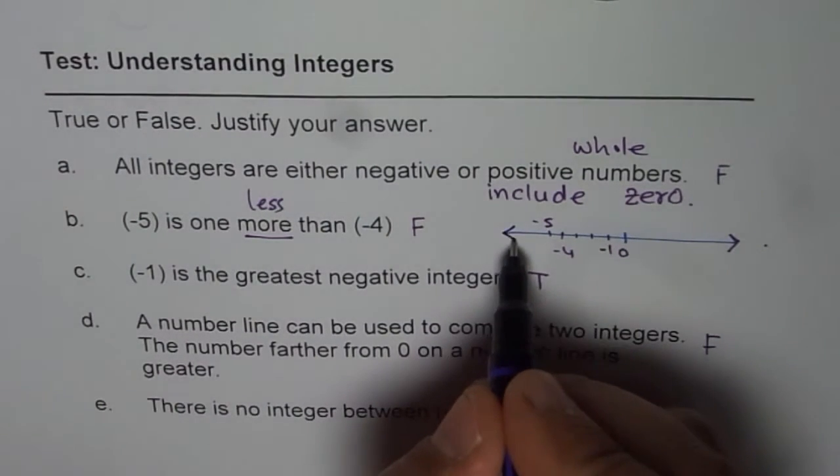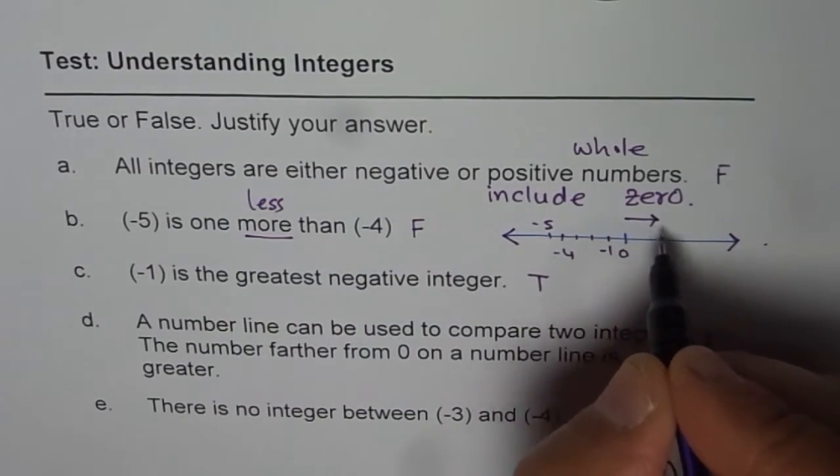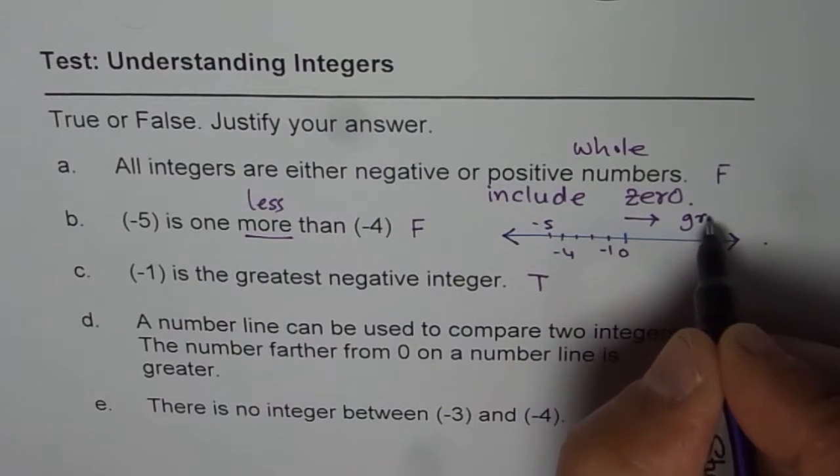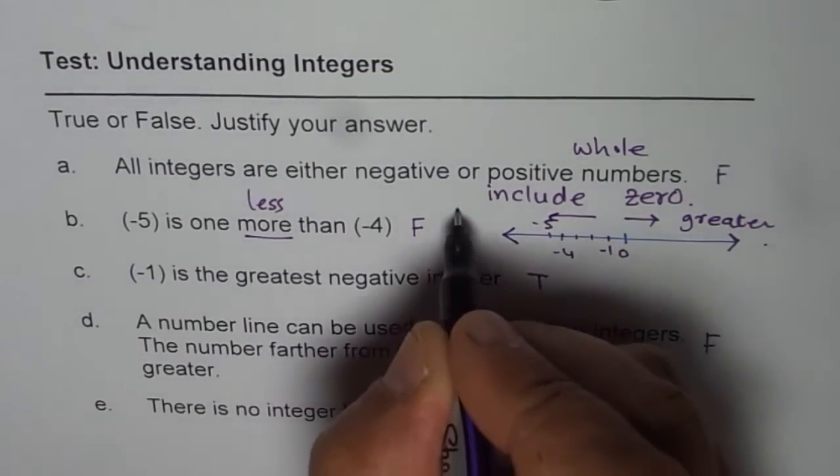But if you go farther to the left, this means least. So, greater numbers are towards this side. This is increasing. The numbers are greater here. And here, the order is decreasing.